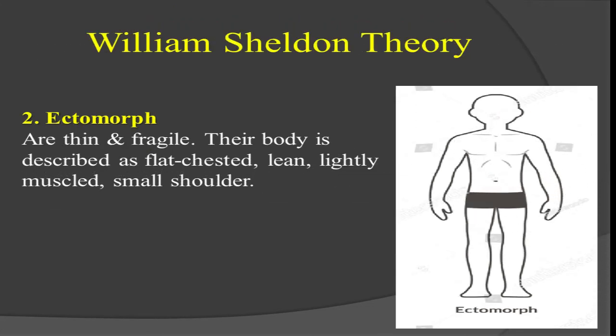According to William Sheldon, ectomorphs are thin and fragile — very small. Their body is described as flat-chested, lean, lightly muscled, and they have small shoulders.